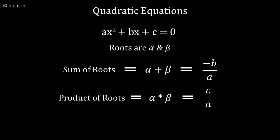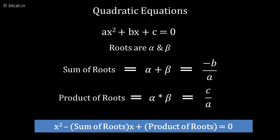The last formula: if we are given the sum and product of the roots and the question is to find the equation, the answer is x² - (sum of roots)x + (product) = 0.